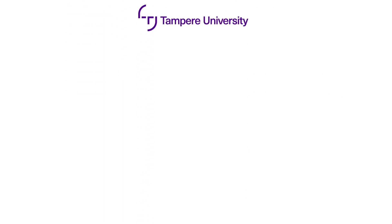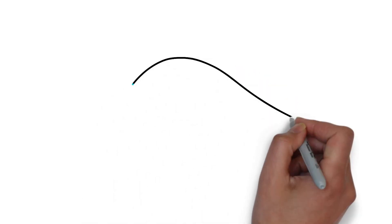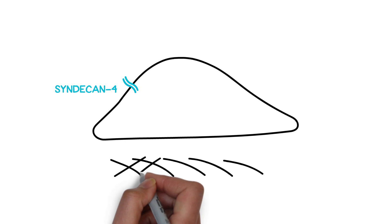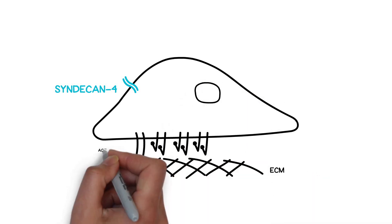In this collaborative work, researchers from Imperial College London, Queen Mary University of London, and Tampere University uncovered a cellular mechanotransduction mechanism by which the ubiquitous transmembrane receptor syndecan-4 initiates mechanochemical signaling to regulate global cell mechanics and consequently activate YAP.